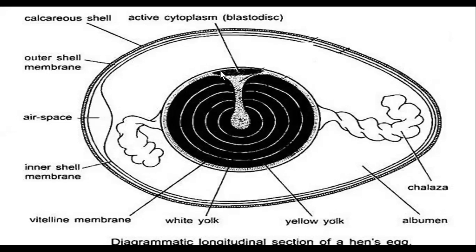The blastodisc is the active cytoplasm or germinal disc where all cell division occurs. The upper region is called the animal pole, because formation of germinal layers, tissues, and organs occurs there. The lower region is called the vegetal pole — very slow cell division occurs here, and this area is utilized as food or nutrients for the cell while it undergoes development.